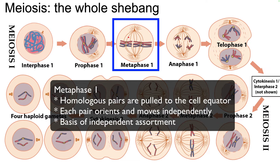During metaphase, the spindle fibers pull these homologous pairs to the center of the cell. Remember that each pair is pulled independently from every other — that's the source of one of the main sources of variation in meiosis: independent assortment. The way that these maternal and paternal chromosomes get arrayed is completely independent. It's two to the number of pairs if you want to mathematically calculate the number of chromosomal arrangements in the gametes.